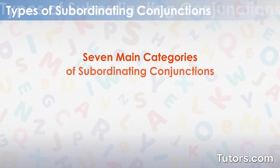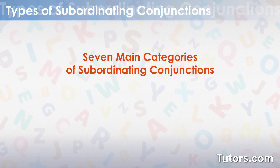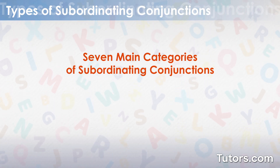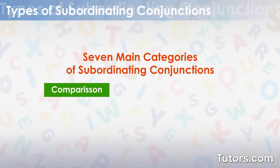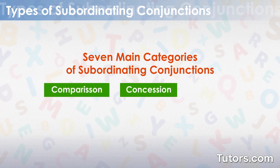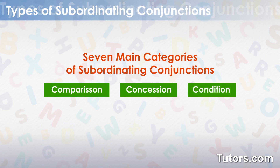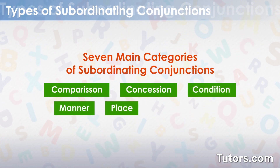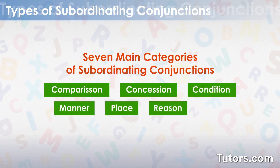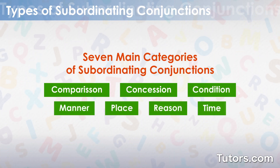There are seven main categories of subordinating conjunctions: comparison, concession, condition, manner, place, reason, and time.